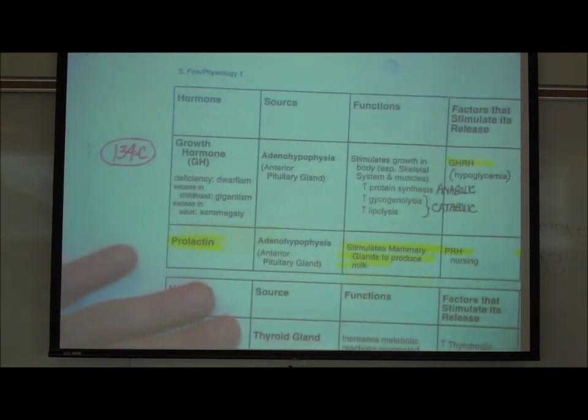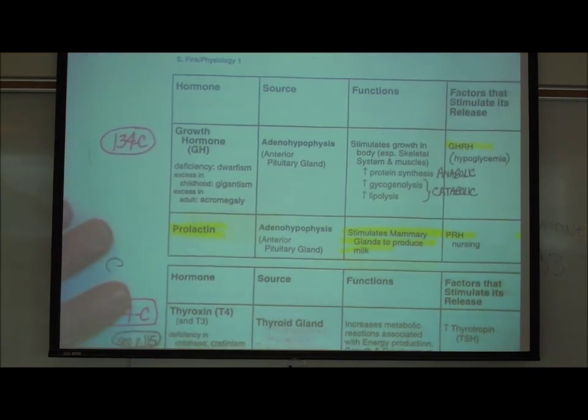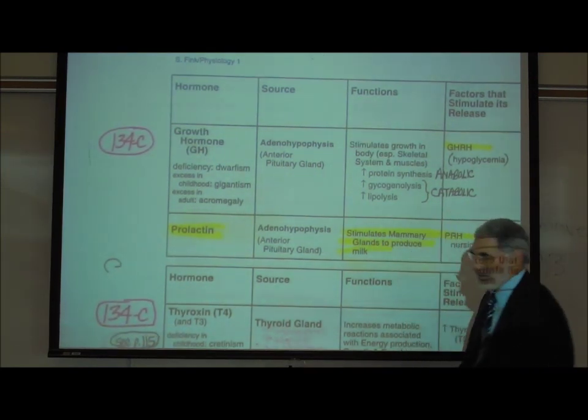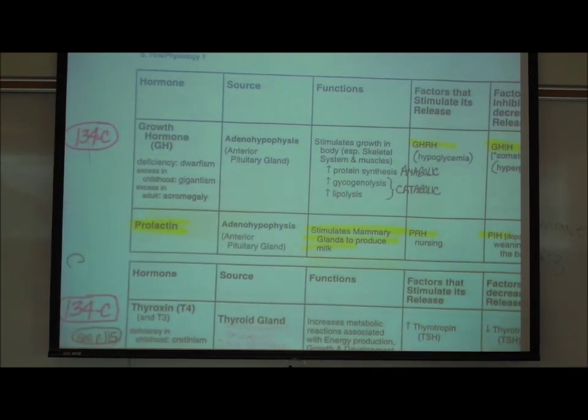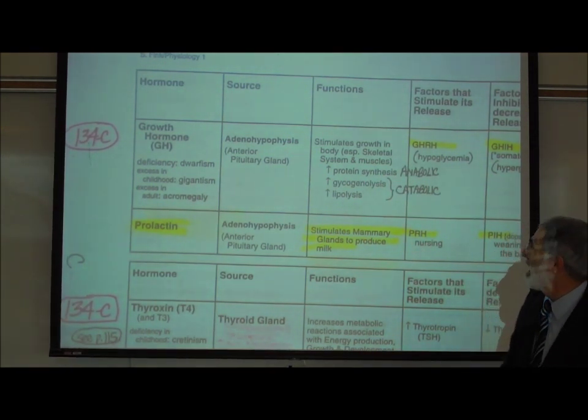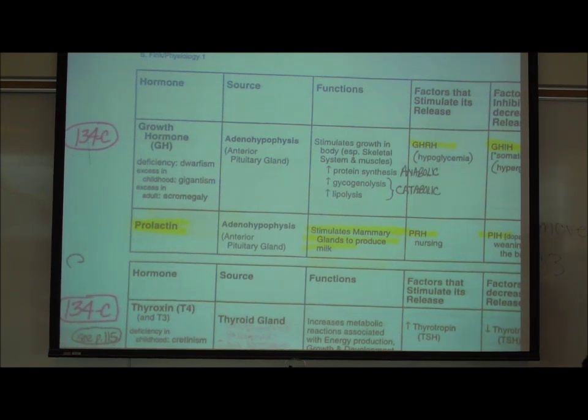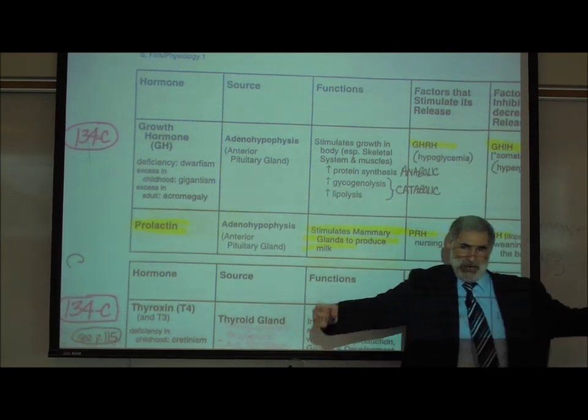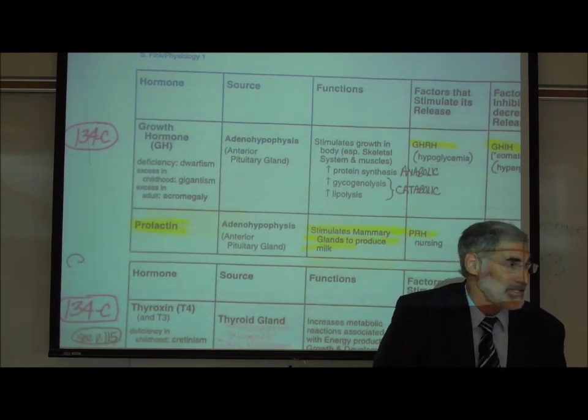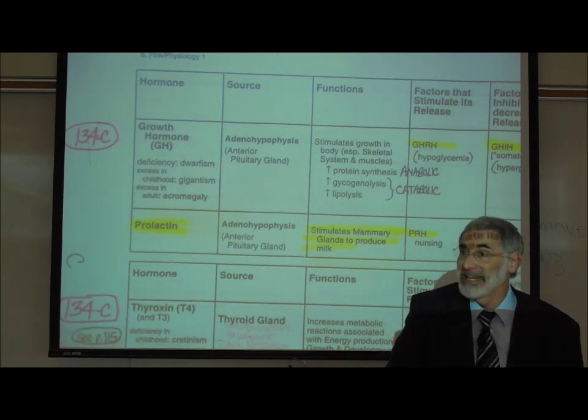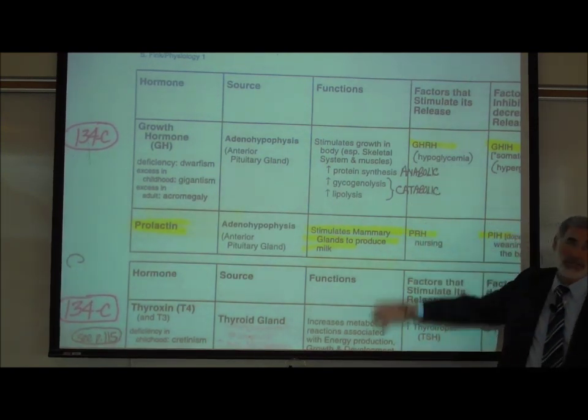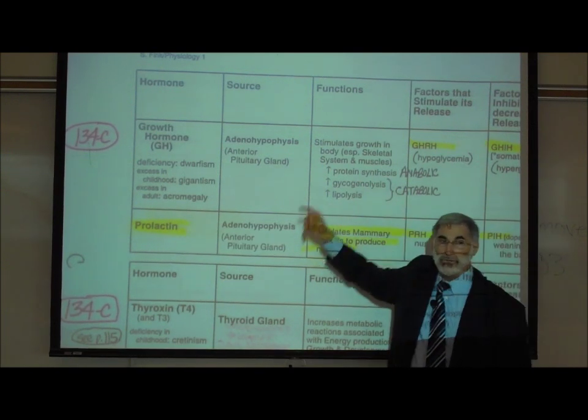Now, growth hormone. Growth hormone is released from the adenohypophysis. It obviously stimulates growth. It stimulates especially the growth of the skeleton, the bones of the body, and it also stimulates the growth of muscles. One of the drugs that many bodybuilders and athletes use is growth hormone, in addition to anabolic steroids like testosterone, because this builds muscle mass. This causes growth of muscles.